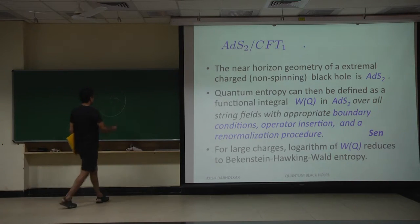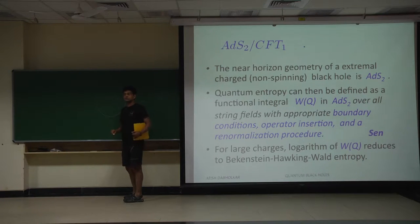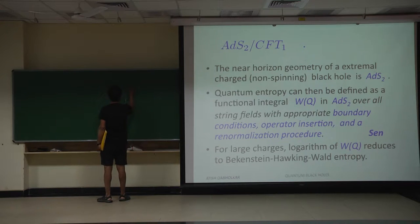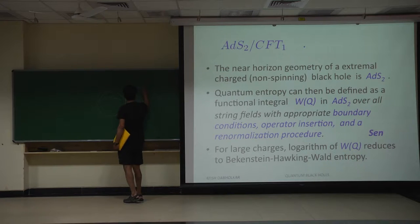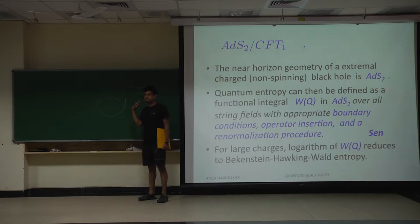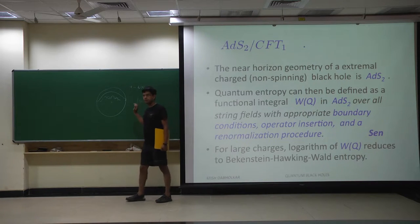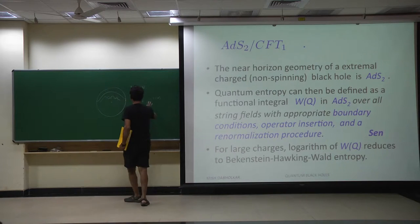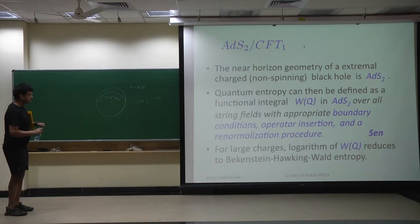We are going to define the path integral in this AdS space. Take a scalar field — I can define a path integral, but I have to specify boundary conditions on the scalar field. I take those to be AdS, meaning φ goes to φ*, a fixed value, which is called the attractor value of that scalar field, depending on the charges of the black hole. You hold the scalar field fixed — it's like a Dirichlet boundary condition on this disk. Then I do the quantum functional integral. When I do it, I will get non-local terms, but they are all incorporated in this path integral. So I don't have to think about an effective action — just a path integral with fixed boundary conditions. The non-local effects come after performing the path integral.